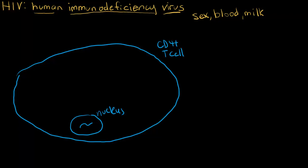This CD4 cell has a particular receptor on it that HIV is able to recognize and bind to. So if HIV gets into the blood, it will float around and bind to that receptor. Inside HIV is its own genetic material. That's step one: binding.